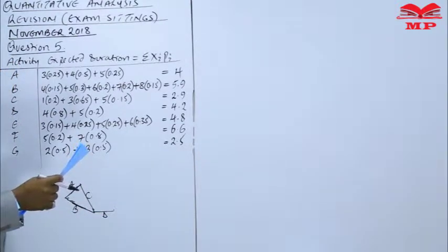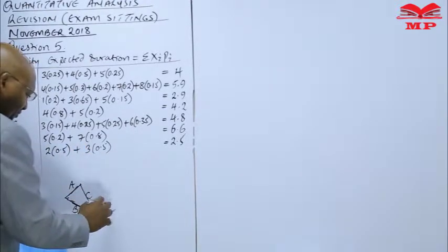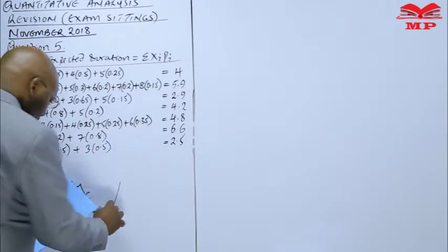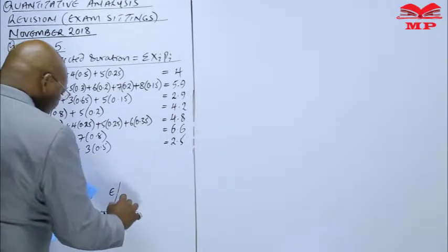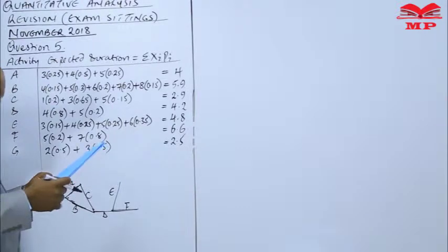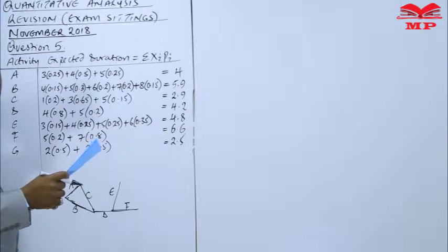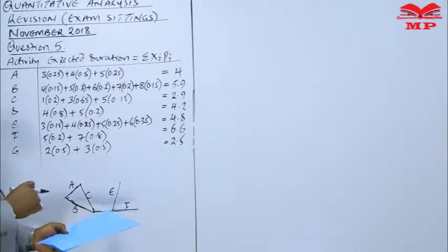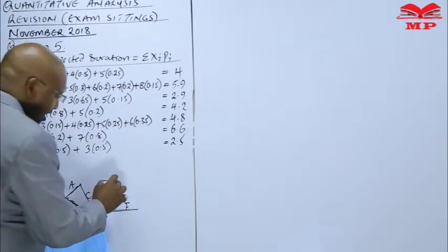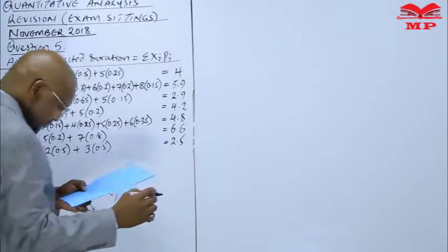Activity E coming from D. Activity F coming from D. So this is activity E and activity F. They are all coming from D. Then G coming from the two combined. There is no way these two can come from the same source. So automatically we are going to have some dummy to give us activity G.